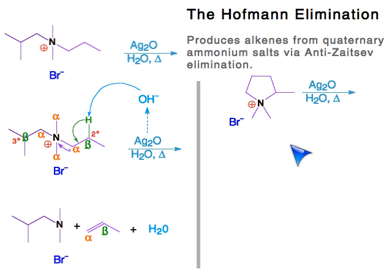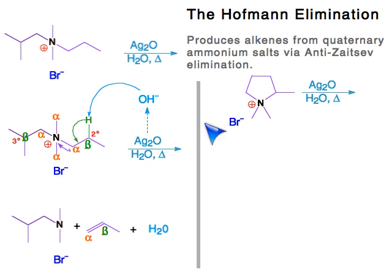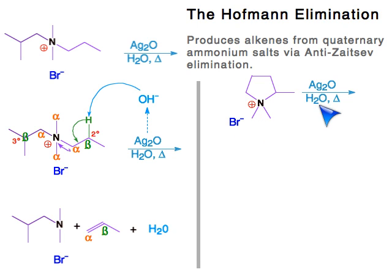This time we're going to use a cyclic quaternary ammonium salt, so the leaving group stays attached because of the ring. Quaternary ammonium salt, silver oxide, water, and heat — standard Hofmann elimination reagents.